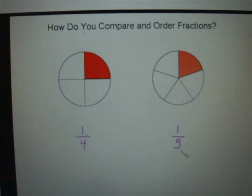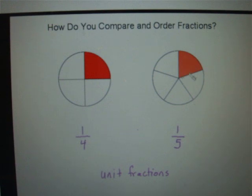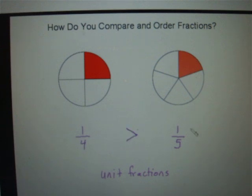You'll notice that this time the denominators are different, but the numerators are the same — in fact, the numerator in each fraction is 1. We call that a unit fraction. Whenever you're comparing unit fractions such as 1/4 and 1/5, the bigger the denominator, the smaller the fraction. So the more pieces you divide your circle into, the smaller each piece will be. So this time 1/4 is the bigger fraction — 1/4 is greater than 1/5.